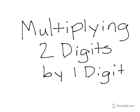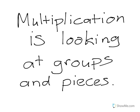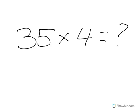This is multiplying two digits by one digit. Multiplication, as we've learned, is looking at groups and pieces. We look at how many groups we have and how many pieces are in each of those groups, and combine those together to get our product.